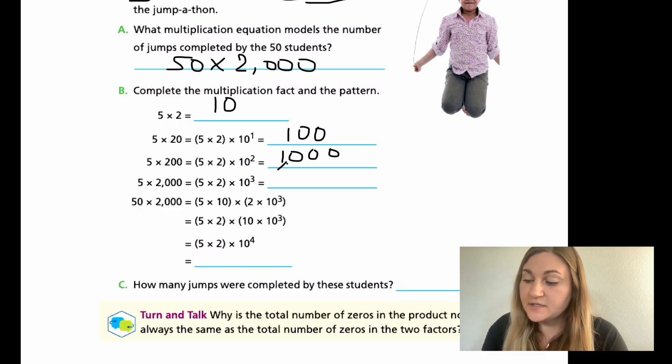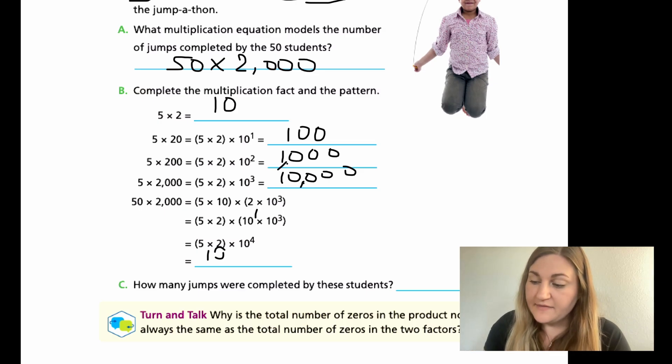5 times 2,000. 5 times 2 is 10. 10 to the third, adding three zeros. Now I have 10,000. Here's the actual problem, 50 times 2,000. I have 5 times 10, because 5 is now 50, and 2 times 10 to the third. Taking my numbers, 5 times 2, and putting my powers of 10 together. I have 10, or 10 to the first, times 10 to the third. Bringing it down, 5 times 2 is 10, and then 10 to the fourth, I'm going to have four more zeros. I have 100,000.